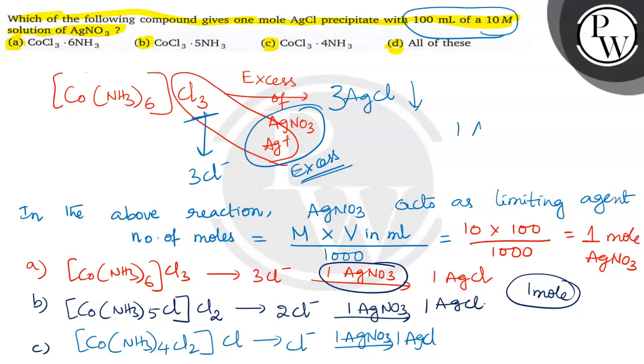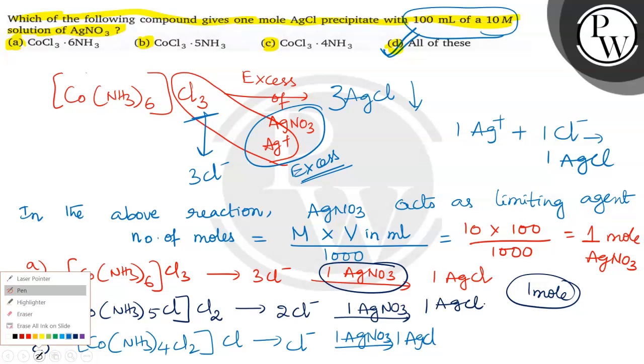One Ag+ combines only with one Cl- and forms one mole of AgCl only. So 2 moles, 3 moles not possible. It depends only on AgNO3. Option D, all of these are giving one mole of AgCl. Option D is the correct answer for this question.